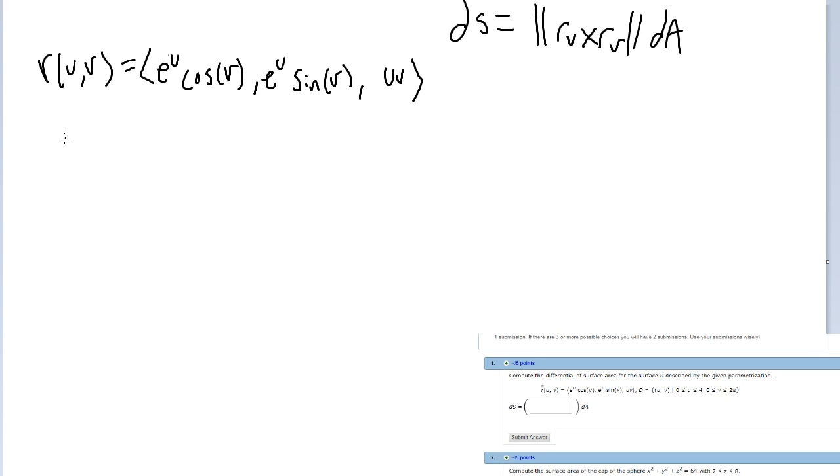Okay so r with respect to u. V's get kind of complicated here so I'll try to keep them looking right. So that is going to be e^u cosine v because this is just a number because it doesn't have any u's in it, and then e to the u is just u e to the u.